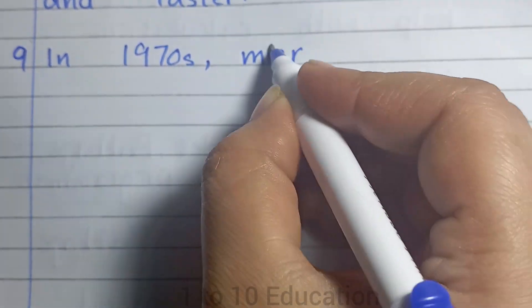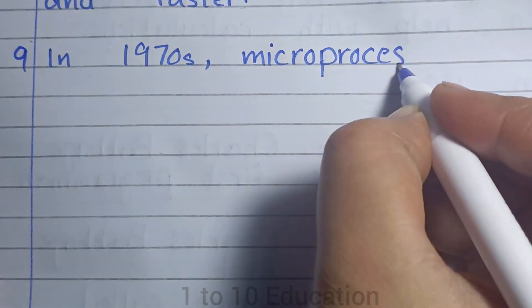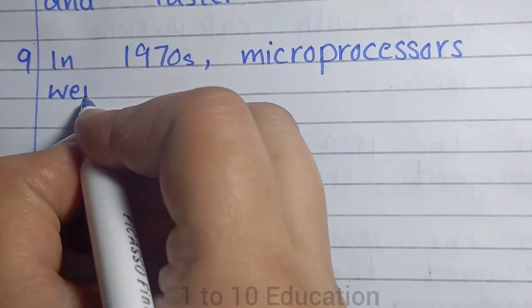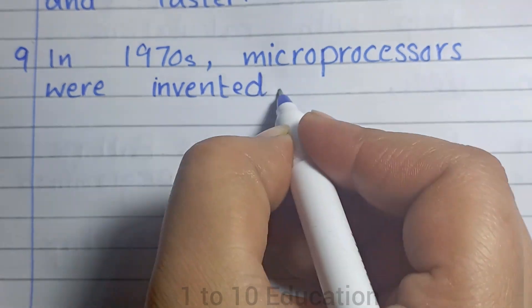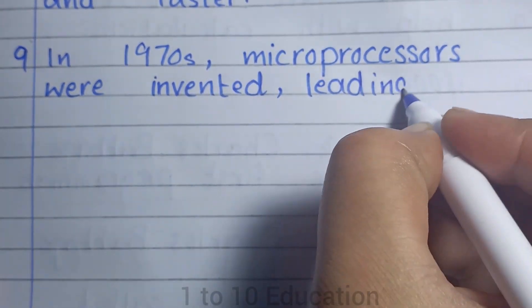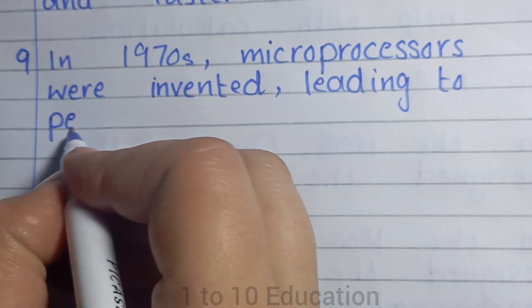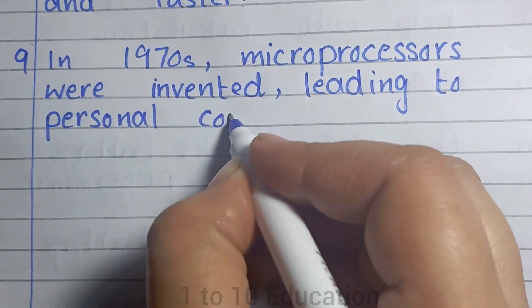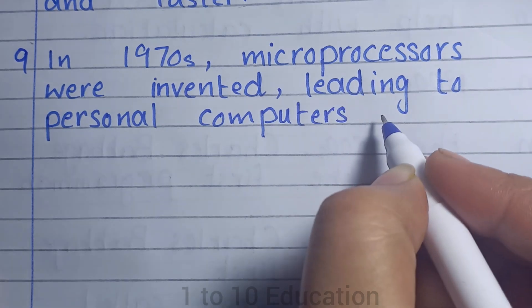Number 7: In the 1970s, microprocessors were invented, leading to personal computers, PCs.